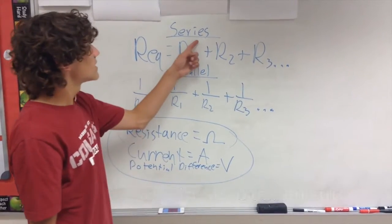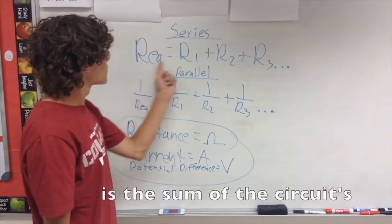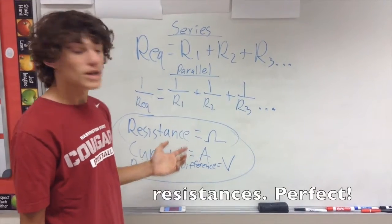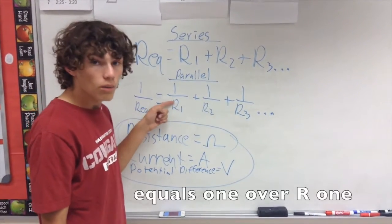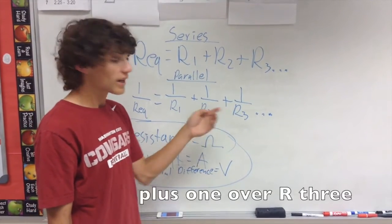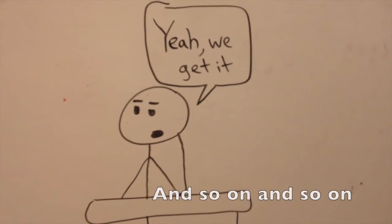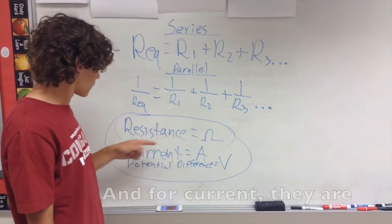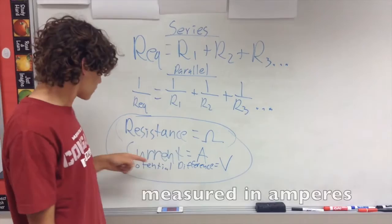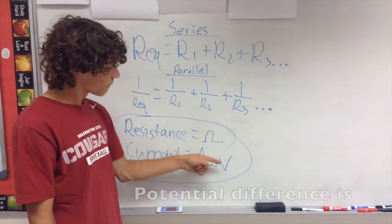The equivalent resistance in a series circuit is the sum of the circuits' resistance. In parallel, 1 over R_EQ equals 1 over R1 plus 1 over R2 plus 1 over R3 and so on and so on. The variable symbol of resistance is ohms. And for current, it's measured in amperes. Potential difference is measured in volts.